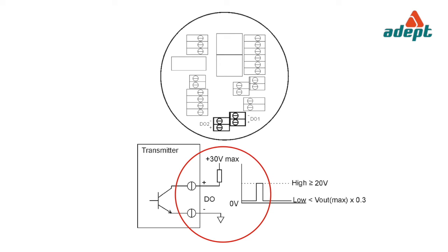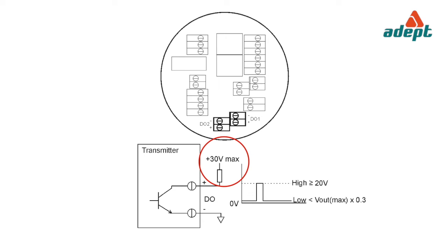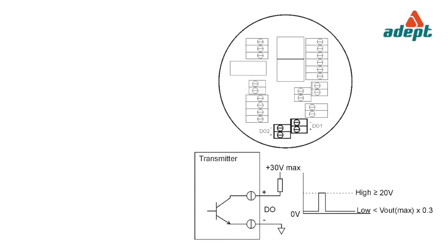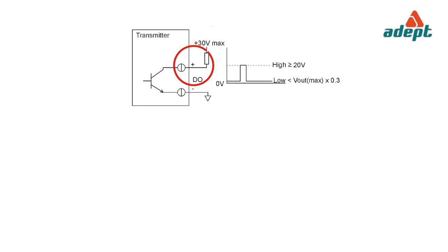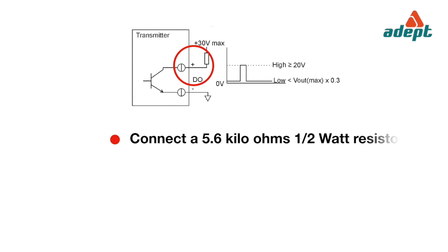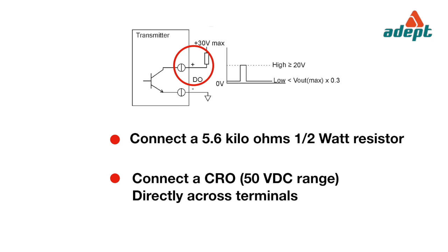Open collector mode: the load is connected between the correct DO positive terminal and the positive of the external DC supply; the negative of the DC supply is connected to the DO negative terminal. The external DC power supply must be within the range of 22.6 to 30V DC, and the load must not be less than 5.6 kilohms. Disconnect the load from the DO positive terminal. Connect a 5.6 kilohm half-watt resistor between DO positive and positive of the supply. Connect a CRO on 50V DC range directly across the terminals.